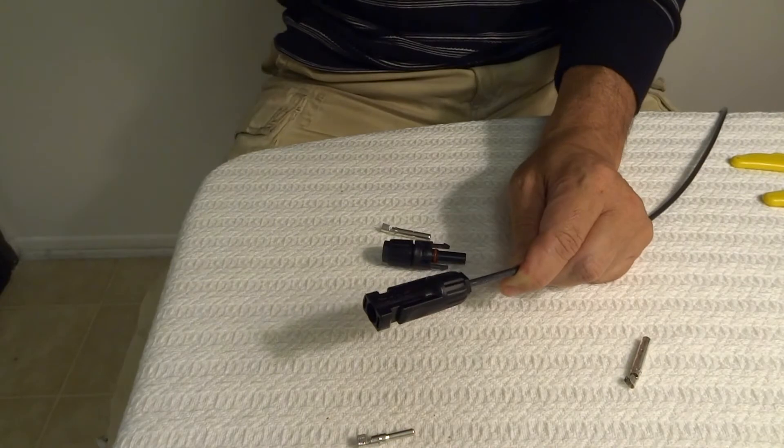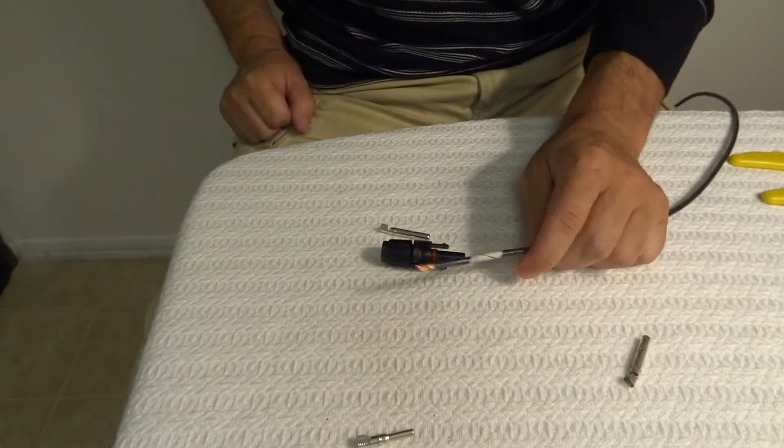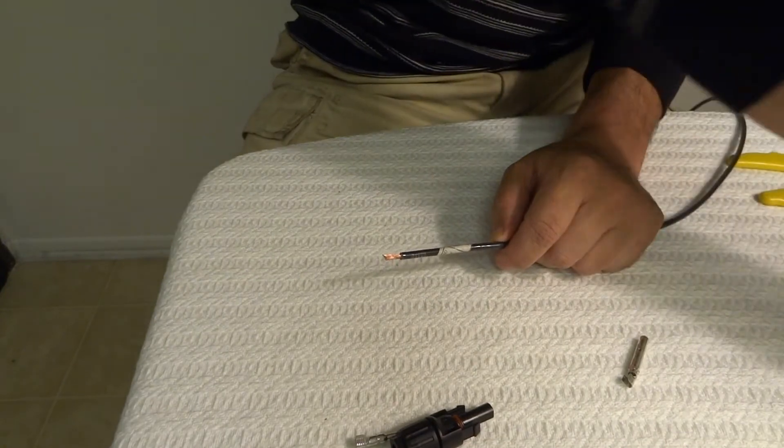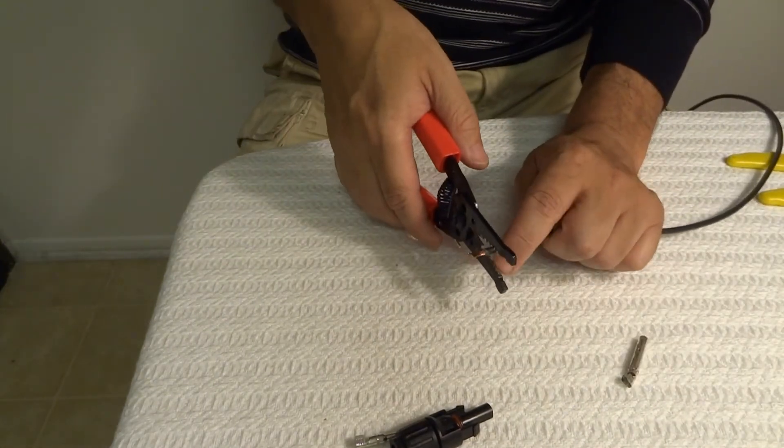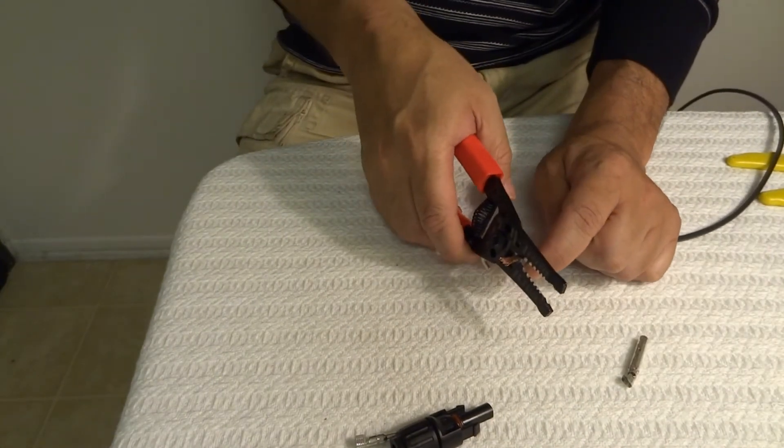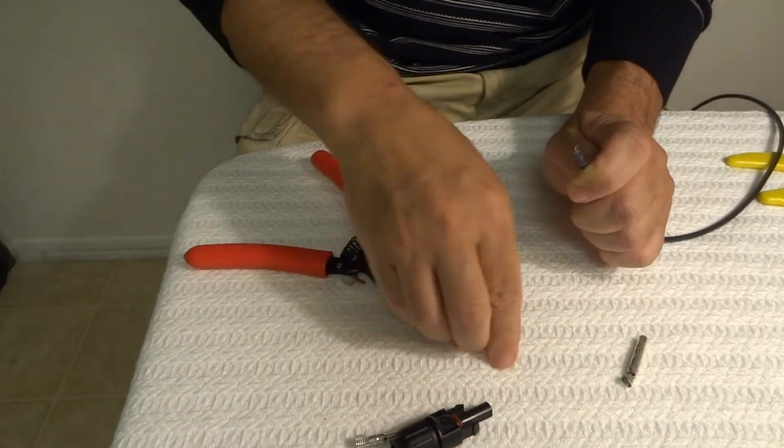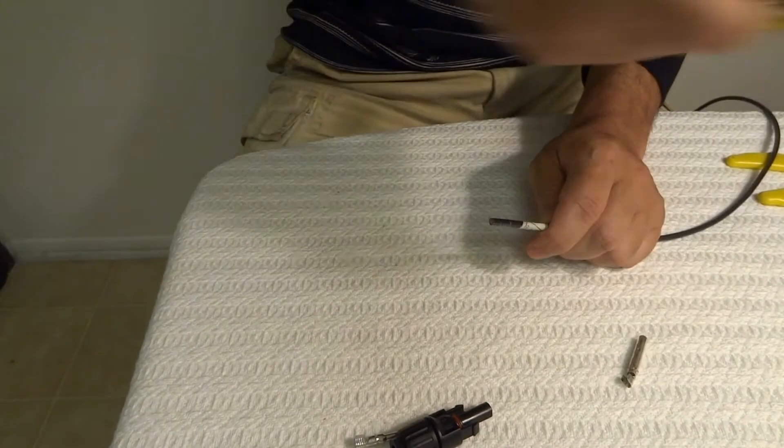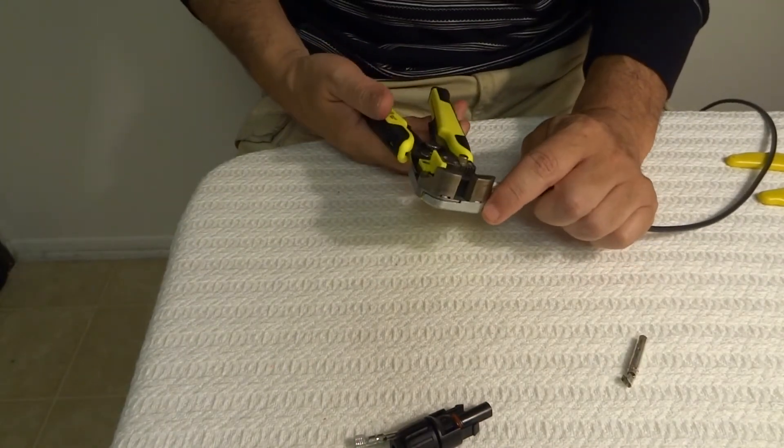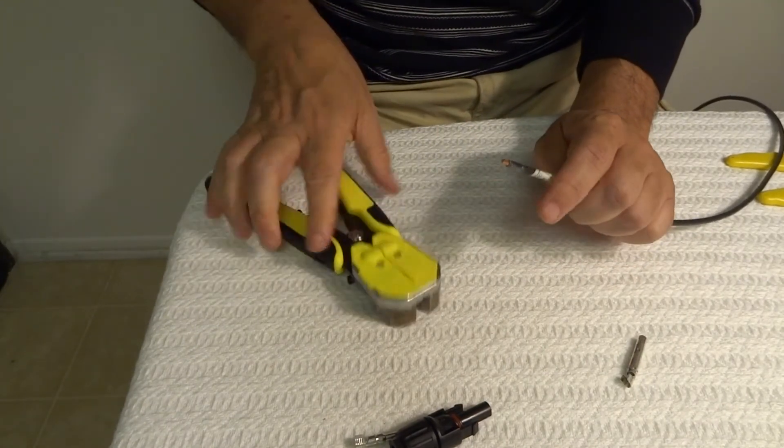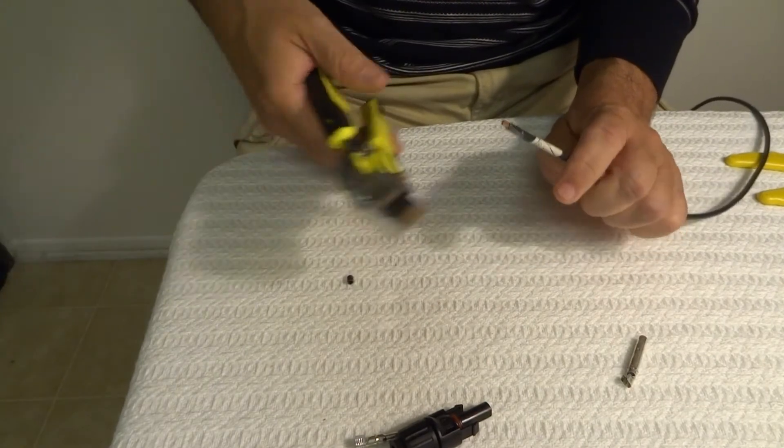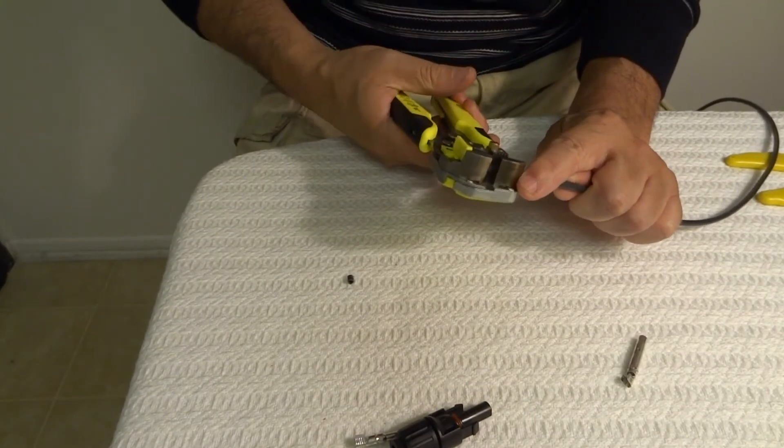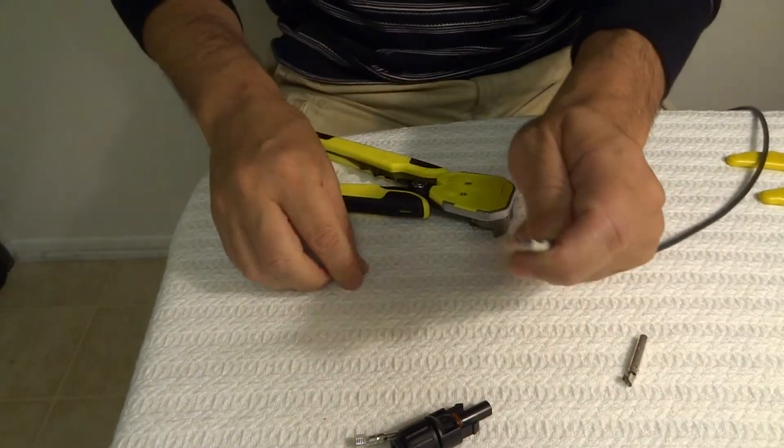Now I'm going to do the female side. So let's do this again. Practice makes perfect. I'm going to cut this end off to get a clean end and I'm going to strip it right here. That's not quite long enough so I'm going to try it again. There we go, that's pretty clean right there.